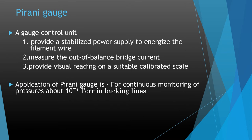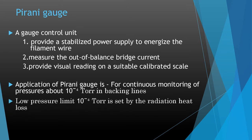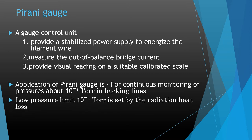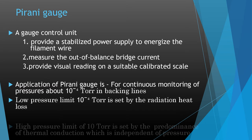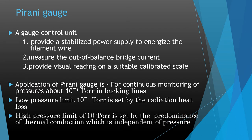The application of the Pirani gauge is for continuous monitoring of pressures around 10⁻⁴ Torr in backing lines. The low pressure limit of 10⁻⁴ Torr is set by the radiation heat loss, and the high pressure limit of 10 Torr is set by the predominance of thermal conduction which becomes independent of pressure. This concludes the Pirani gauge.